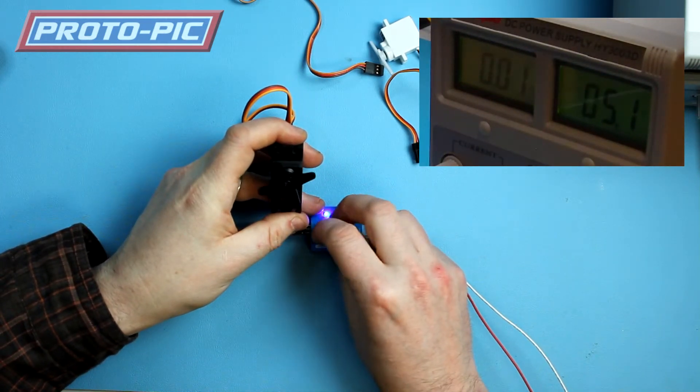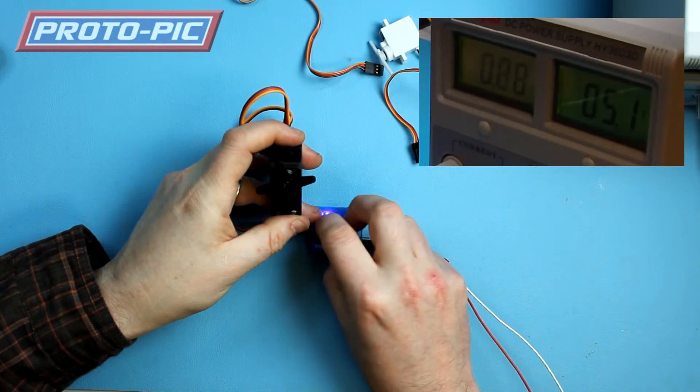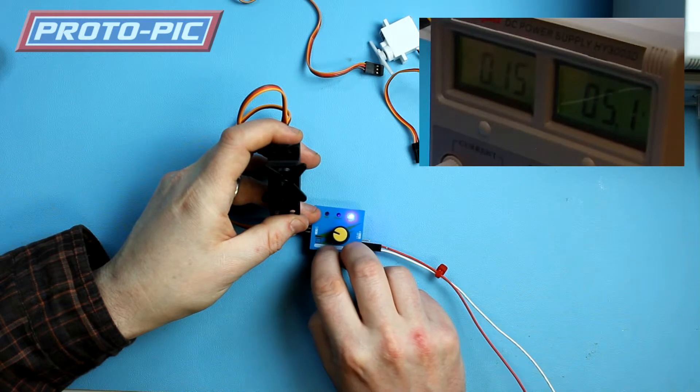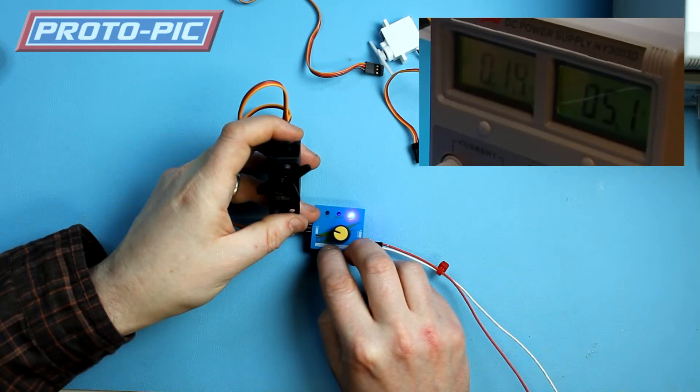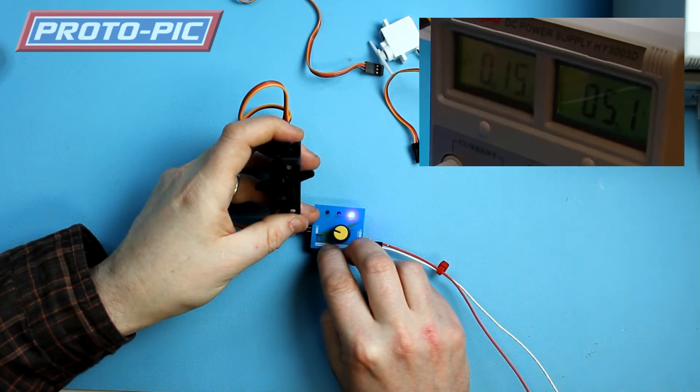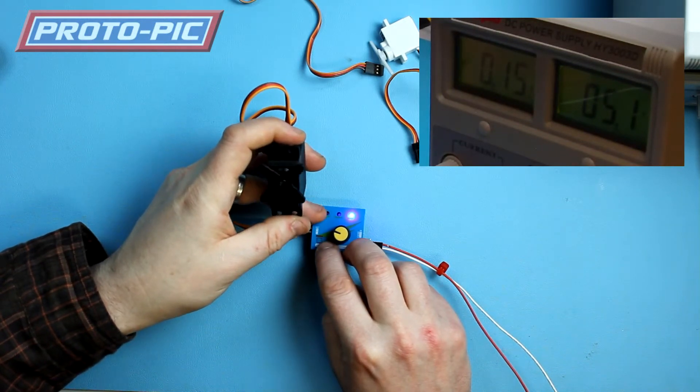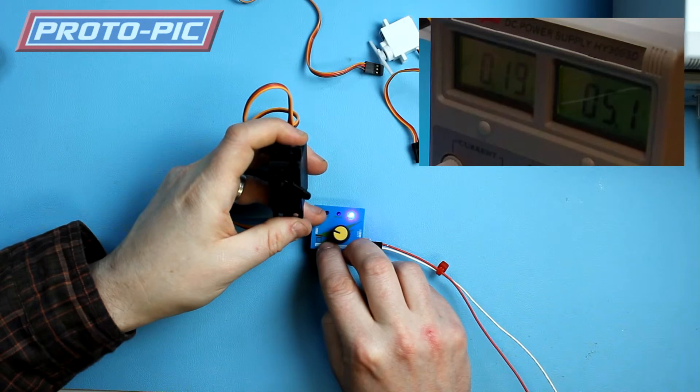Manual mode. Neutral and auto mode. And just running that with no load we're showing just about 0.2 of an amp.